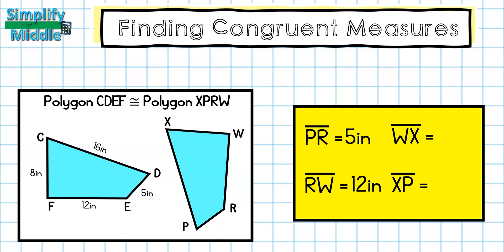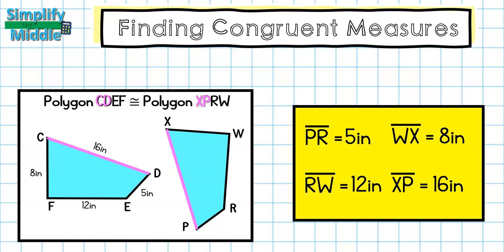Line segment WX is written in the last and first position. The last and first position on the other polygon is FC, so line segment FC has a measure of eight inches, which is the same for line segment WX. Then, line segment XP is in the first two positions. CD are in the first two positions, so that measure is 16 inches.